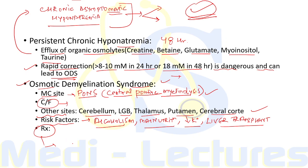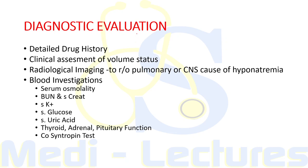For diagnostic evaluation, detailed drug history is crucial as drugs are an important cause of SIADH and other forms of hyponatremia. Clinical assessment of volume status is essential for the classical diagnostic approach — determining whether hyponatremia is hypovolemic, euvolemic, or hypervolemic. Radiological imaging should be done to rule out pulmonary or CNS causes of hyponatremia. CT scan is preferred over chest X-ray for pulmonary causes, as chest X-ray can miss small cell carcinoma of the lung.